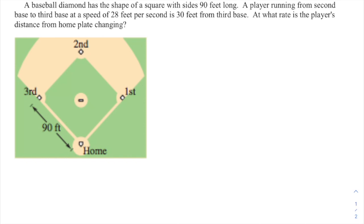This time we're on the old baseball diamond. For those of you that don't know, it has the shape of a square, each side being 90 feet long. A player running from second base to third base, so we'll put it right here somewhere, kind of in the middle to give us a little space to work with.